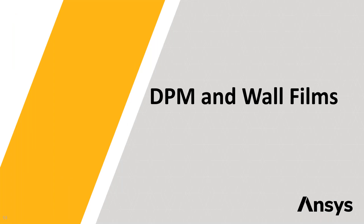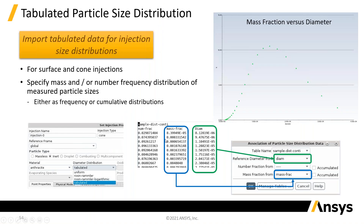Moving on to the related area of the discrete particle model and wall films, which go together naturally because they interact so strongly. One thing users will like is a new tabular injection type. If you've got experimental data of frequencies or cumulative distribution against size, you can read a text file into Fluent, specify whether it's a cumulative or probability density distribution, choose whether it's based on number or another metric, and get this into your calculation without having to fit anything to it.